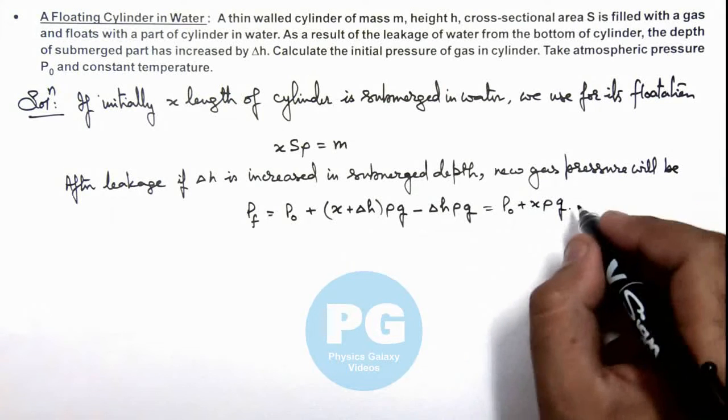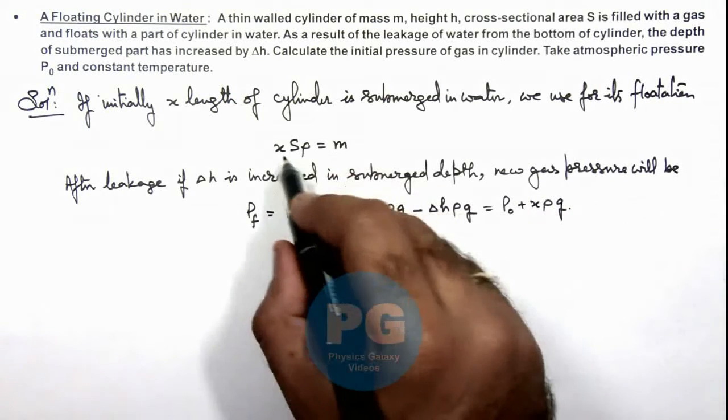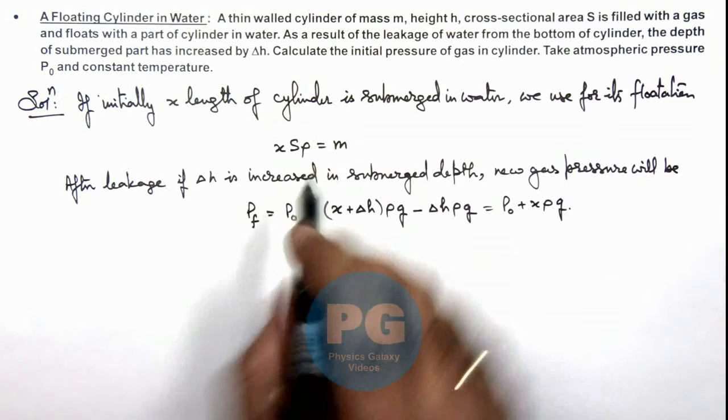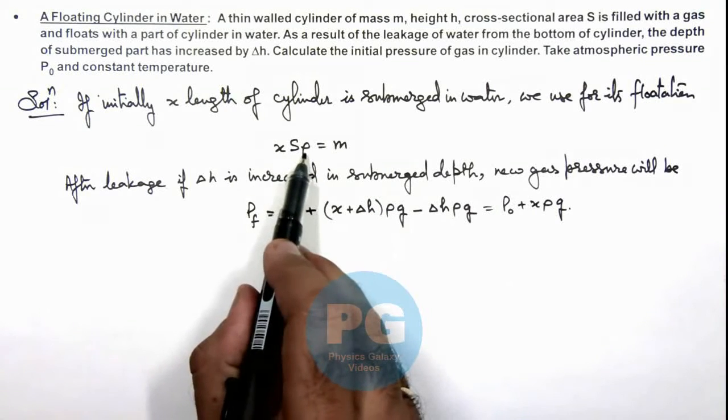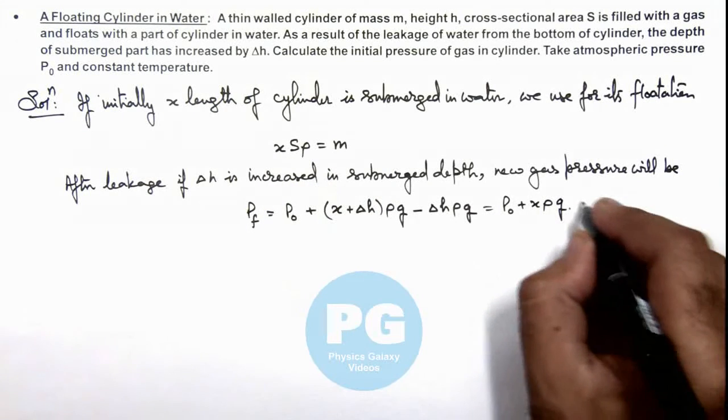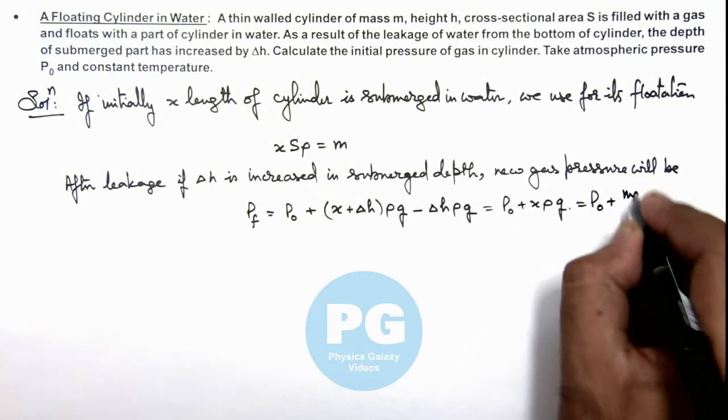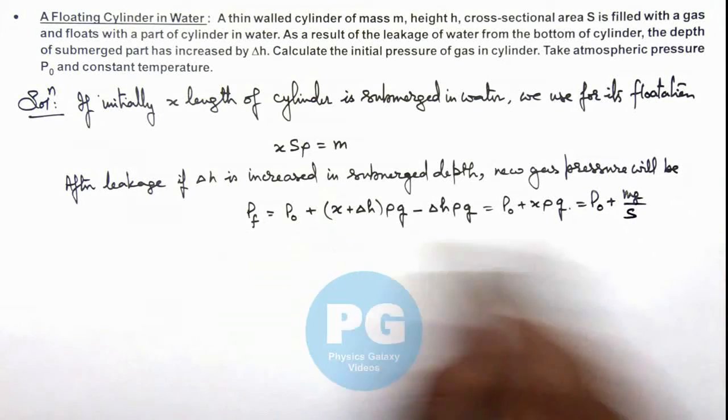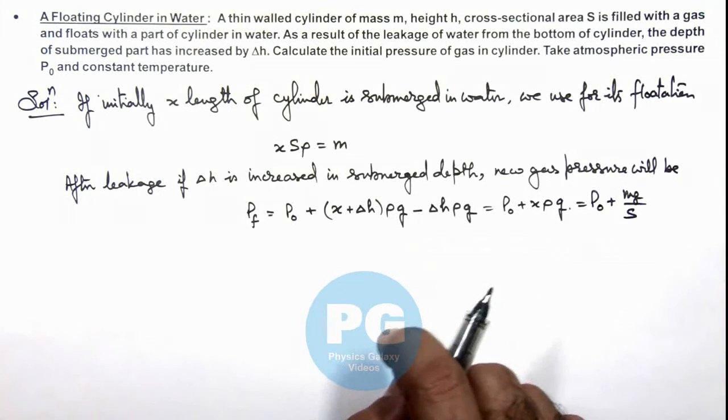In this situation x·ρ·g we already have. x·ρ·g can be written as m·g/S. So this can be written as P₀ plus m·g/S. So this is the final pressure of gas inside cylinder.